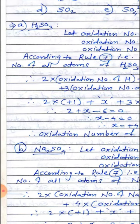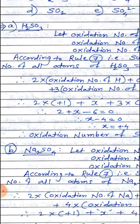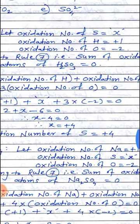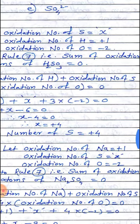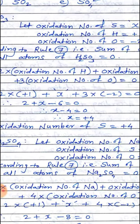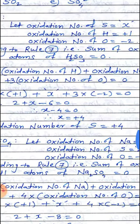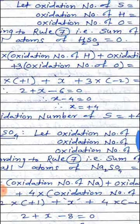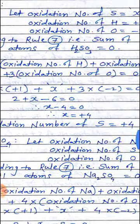Therefore x equals plus 4, meaning the oxidation number of sulfur in H₂SO₃ is equal to plus 4.